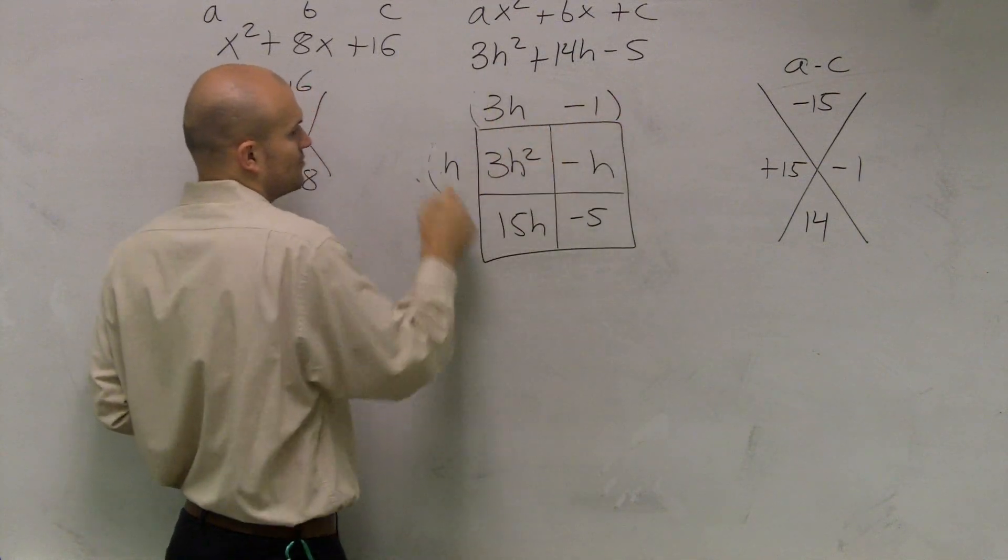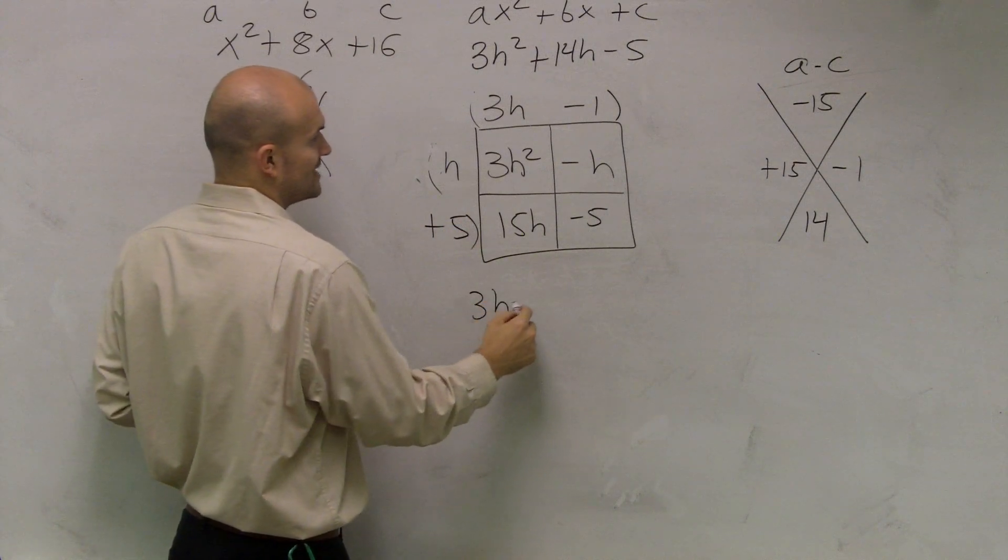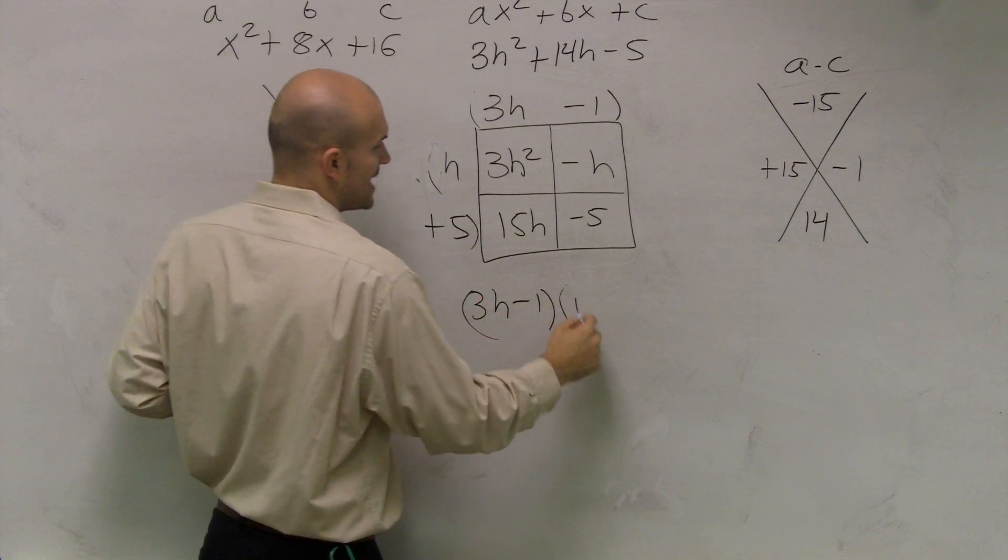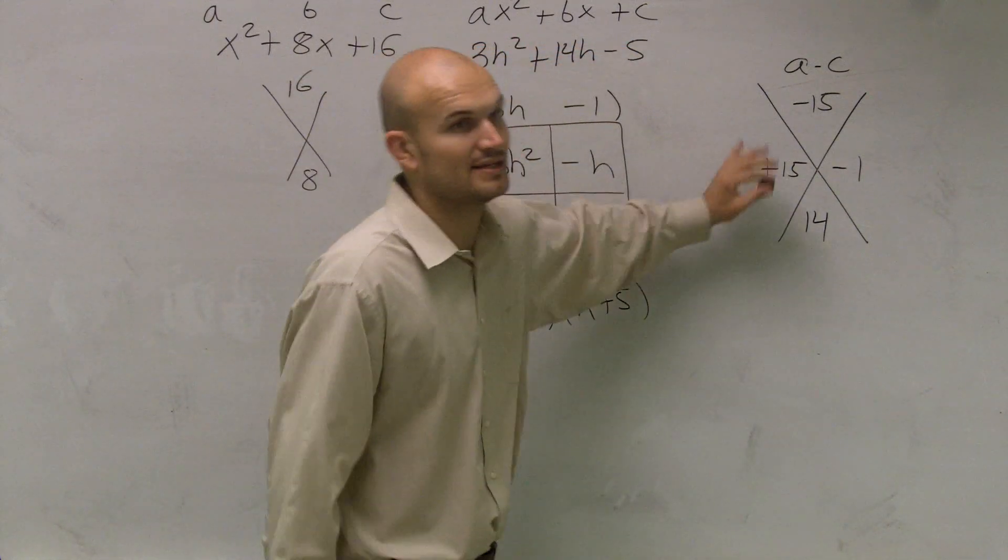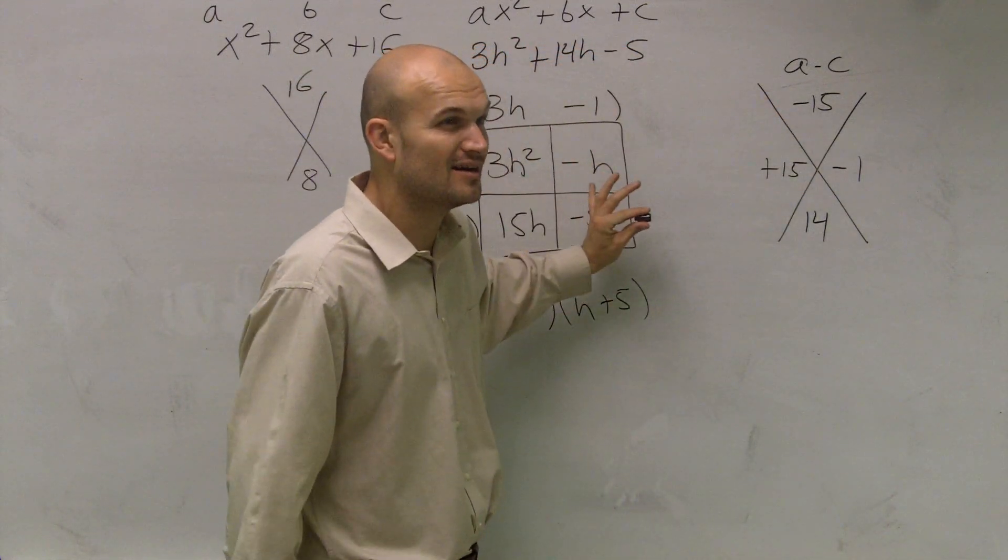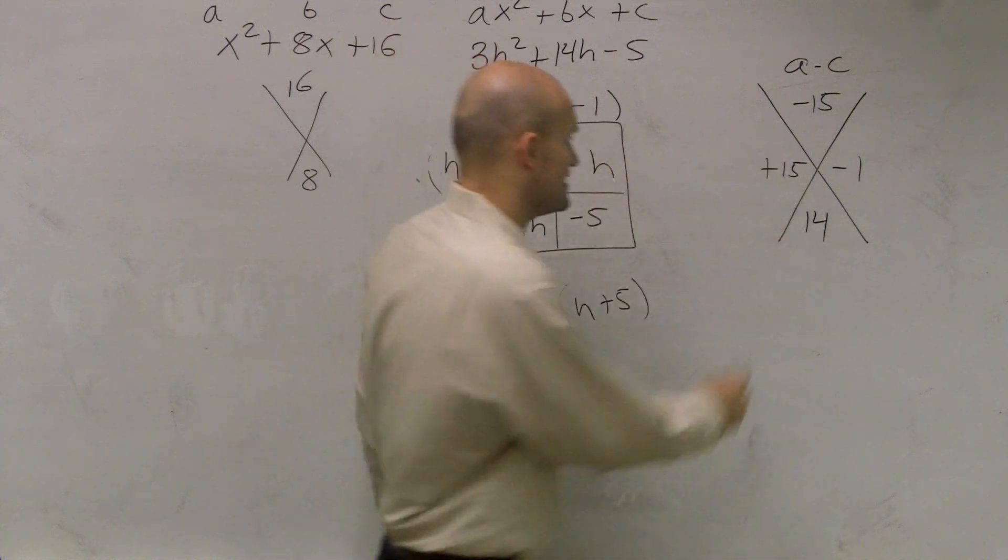So my answer on these two binomials. 3h minus 1 times h plus 5. And what's different about that is everybody wants to automatically, they forget. That's why I showed you guys this area. It's the area. It's not just what these answers are.